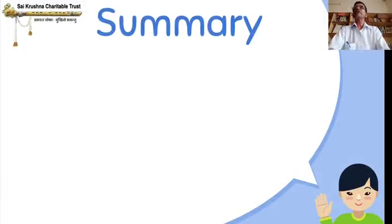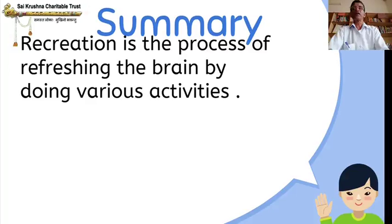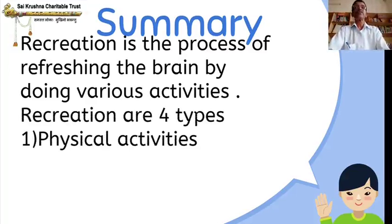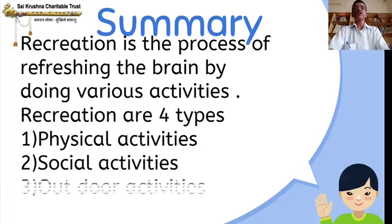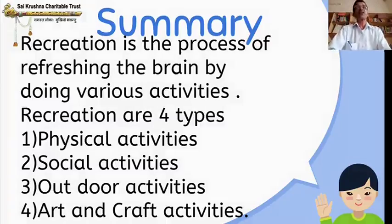Summary of the lesson: Recreation is the process of refreshing the brain by doing various activities. There are four types of Recreation — Physical Activities, Social Activities, Outdoor Activities, and Art and Craft Activities.